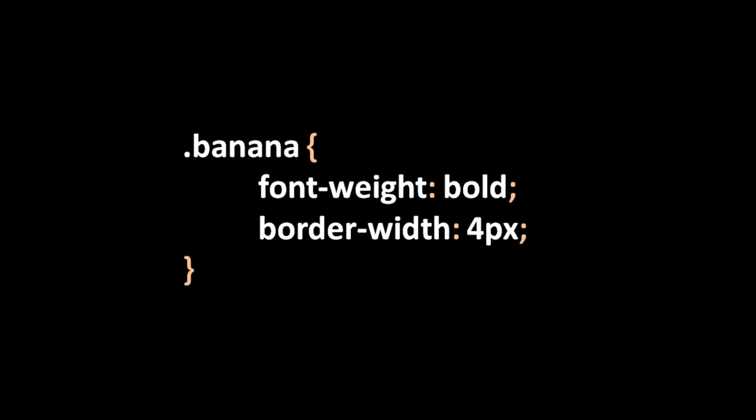ID selectors and class selectors are by far the most common selectors you're going to use, but things can get more interesting. We can write say "div.banana" — meaning all divs that are members of the class banana get these properties. So if we have an element which is a member of the class banana but which is not a div, then this rule will not apply.